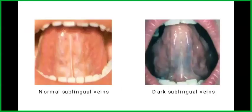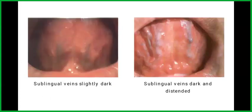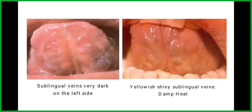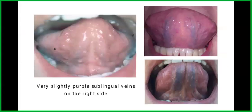Let's look at a few pictures of the sublingual veins. On the left side you can see normal sublingual veins, and on the right the sublingual veins have become dark. In the next picture, the sublingual veins are slightly dark on the left, and on the right they are dark and distended. In the following picture on the left, the sublingual veins are very dark on only one side. On the picture on the right, the veins are yellowish and shiny, which is damp heat. In these pictures you can see very slightly purple sublingual veins on the right side.